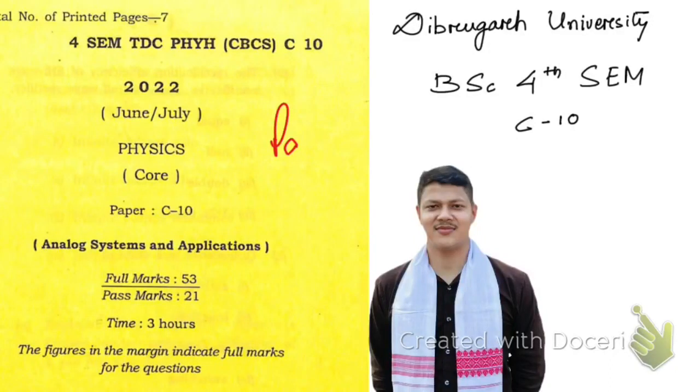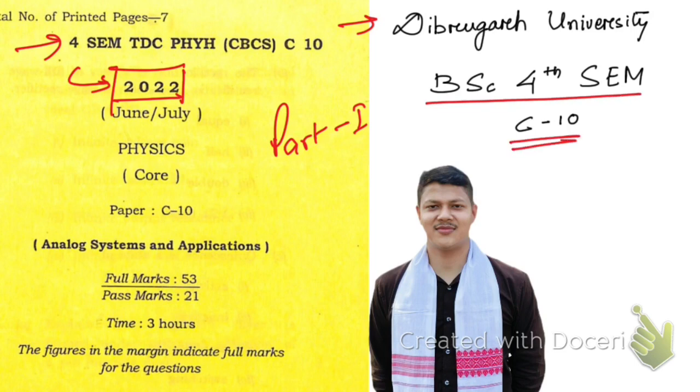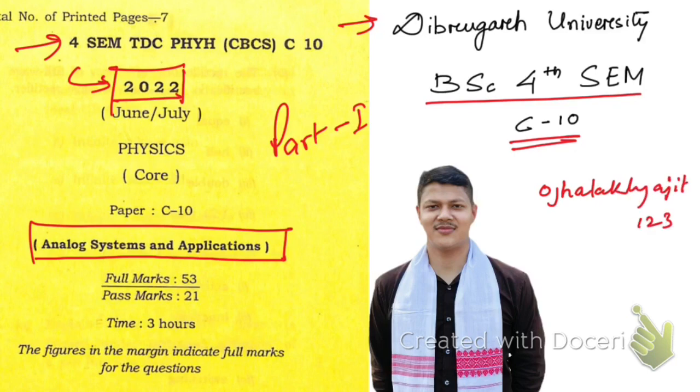Hello friends, welcome to part one of the solved paper 2022, fourth semester Dibrugarh University BSc fourth paper C-10, which is Analog Systems and Applications. If you want to follow me on Instagram, this is my Instagram ID: ozhalikesit123. Before we start, please subscribe to the channel, hit the thumbs up button, share with your friends, inspire me to create new content for you, help me to grow my channel, and press the bell icon so that you get notified when new videos are uploaded.